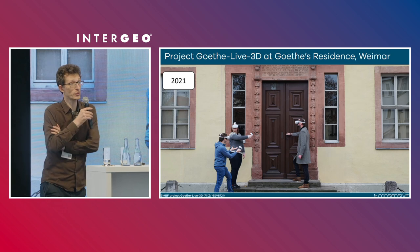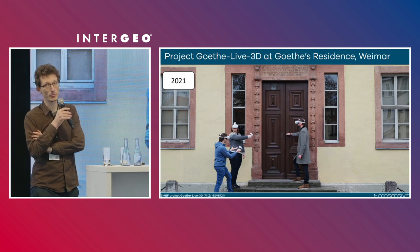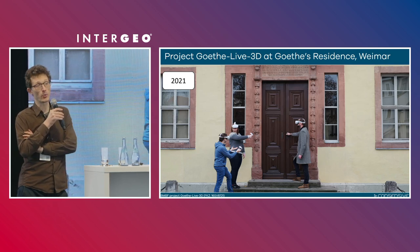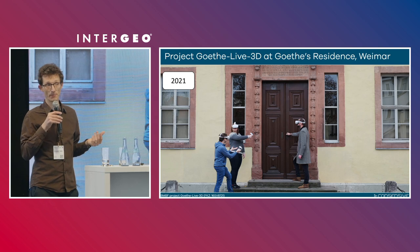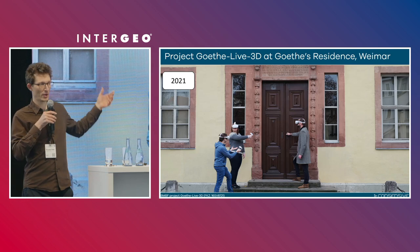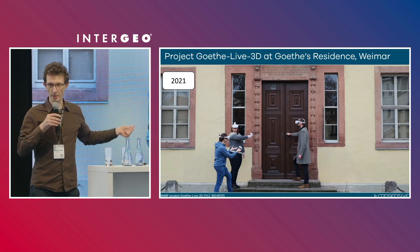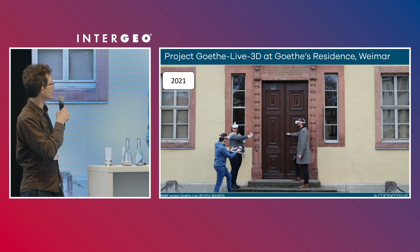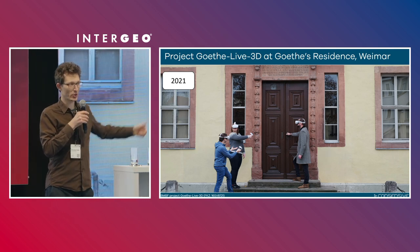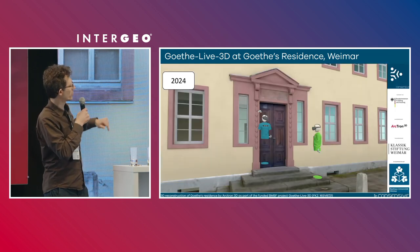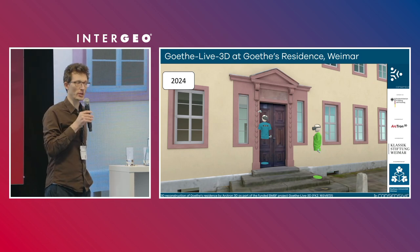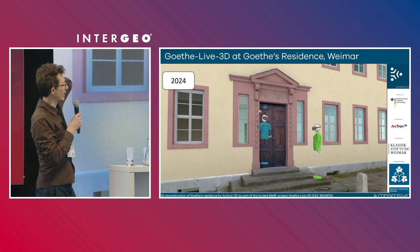I want to explain what we do on the example of a BMBF-funded project that we ran for about three years. It was about the digitization of one of Germany's most renowned museums — the house where Johann Wolfgang von Goethe lived in Weimar. We started in 2021 with the idea of experiencing it in VR, and now we can do that. If you're interested, we have a few headsets over at the booth where we can show that to you, along with Schlossborg and other data sets.